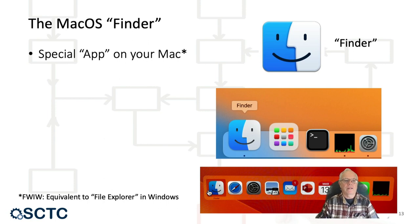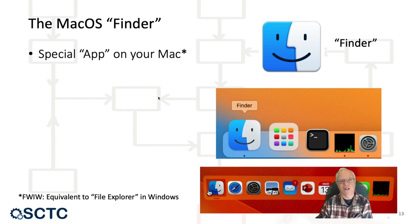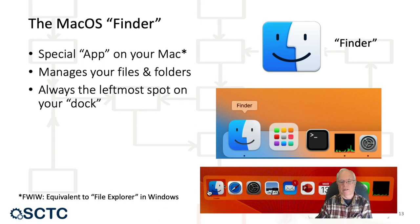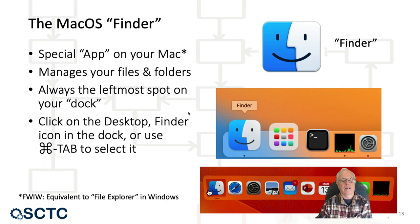Mac OS has a special app called the Finder — you're probably familiar with this smiley face icon from 1984. This is equivalent to File Explorer in Windows. Windows and Apple Macs have essentially the same file system structure. The Finder is the way to navigate the file system on your Mac. It's always the leftmost position on your dock, and you can use Command+Tab to select it as the current app.